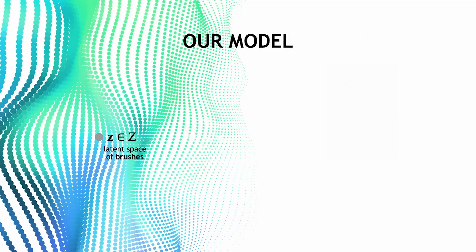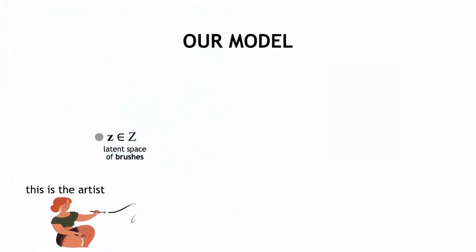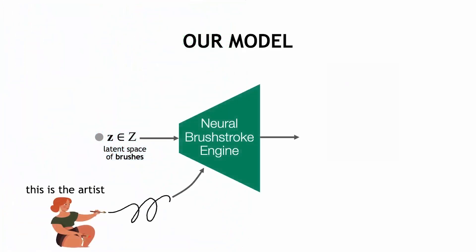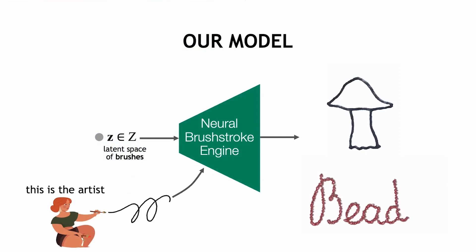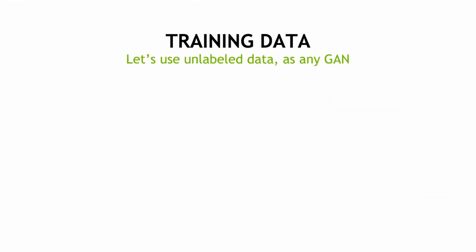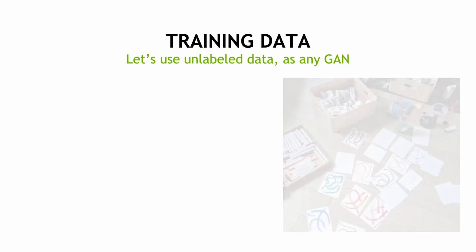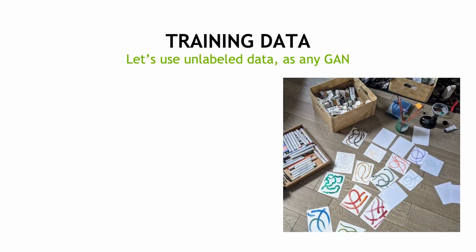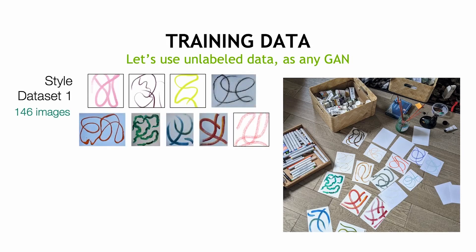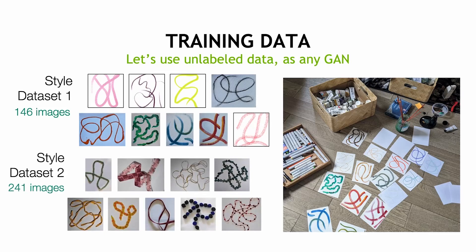Once a point on this manifold is selected, an artist can interactively draw strokes in the selected style. As with any GAN-based method, our goal is to train our generator on completely unlabeled datasets, and we informally collect a dataset of traditional styles as well as more unusual craft materials.